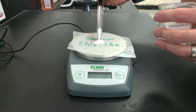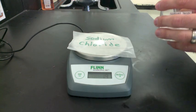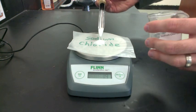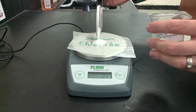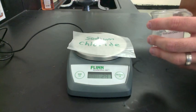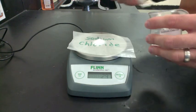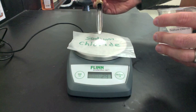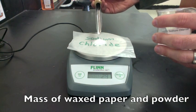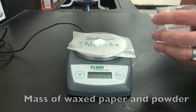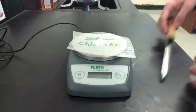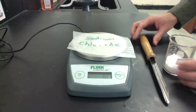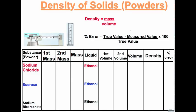We can then put the powder, the sodium chloride, on the wax paper, and find the new mass. The combined mass of the wax paper and the sodium chloride is 3.0 grams. We can put these values onto our data table.